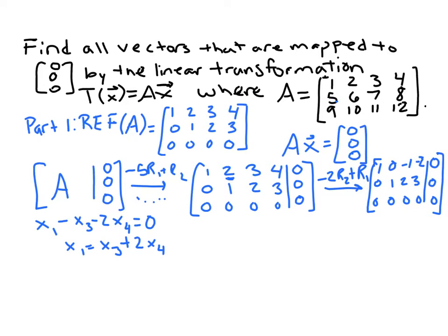Row 2 says that x2 plus 2x3 plus 3x4 is equal to 0, so that x2 is equal to negative 2x3 minus 3x4.